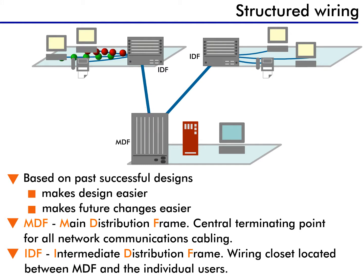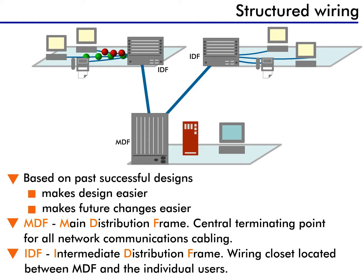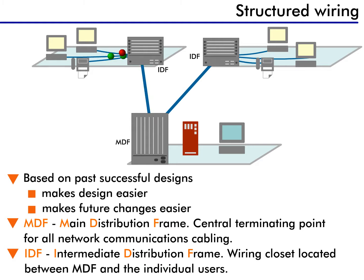So let's start at the beginning and learn about how structured wiring works. Every network has a central point, typically in the MIS department, that contains computers, servers, concentrators, and wiring panels. This area is called the main distribution frame, or MDF. The MDF is really just a secure location where everything in the network comes together. From the MDF, wiring extends out to all other locations.